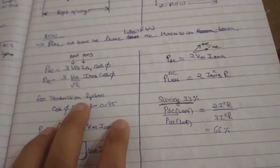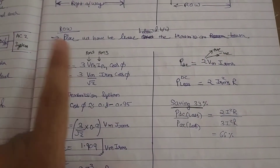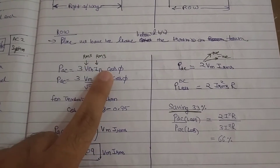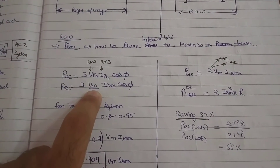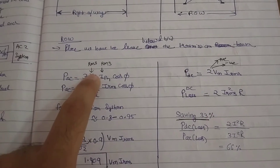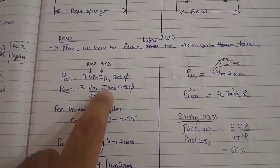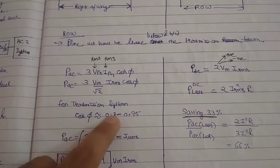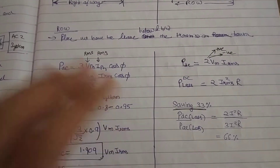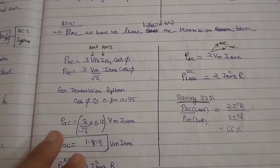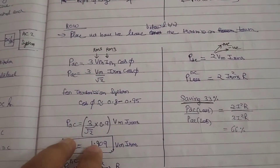Power is a very important factor. If I talk about AC power: 3 × V per phase × I per phase × cos φ. What is the RMS value? RMS is maximum divided by root 2. For transmission, if I talk about power factor, it is 0.8 to 0.95. So power of AC is 3 divided by root 2, accounting for power factor.